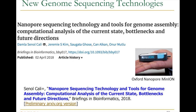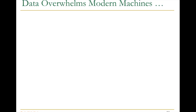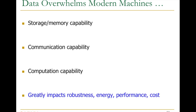This is an example of macro-level, global data movement we're causing in the world. I'll focus more on the micro level, but it's the same mindset. We have a mindset that leads to a lot of data movement and churn in the system. An intelligent architecture would hopefully eliminate that. If you look at all these applications, data overwhelms modern machines — it overwhelms storage and memory capability, communication capability, and ultimately bottlenecks computation. Data storage and movement greatly impacts robustness, energy, performance, and cost — all the metrics we really care about.